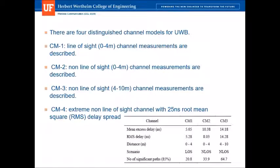Using these conditions, there are four channel models for ultrawideband communication. Channel model 1 is line-of-sight communication in short range, 0 to 4 meters. Channel model 2 is for non-line-of-sight in the same range. Channel model 3 is for non-line-of-sight at a slightly higher range of 4 to 10 meters. Channel model 4 is the extreme case, also non-line-of-sight, with a 25 nanosecond RMS delay spread. Looking at the table, the number of significant multipath components capturing 85% of the energy is 21 for channel model 1, 34 for channel model 2, and 65 for channel model 3.